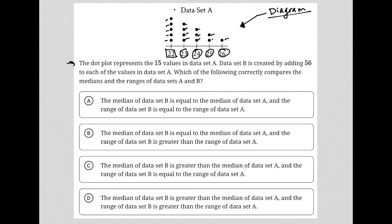The question explains that the dot plot represents the 15 values in data set A. Data set B, which is not shown here, is created by adding 56 to each value in data set A.